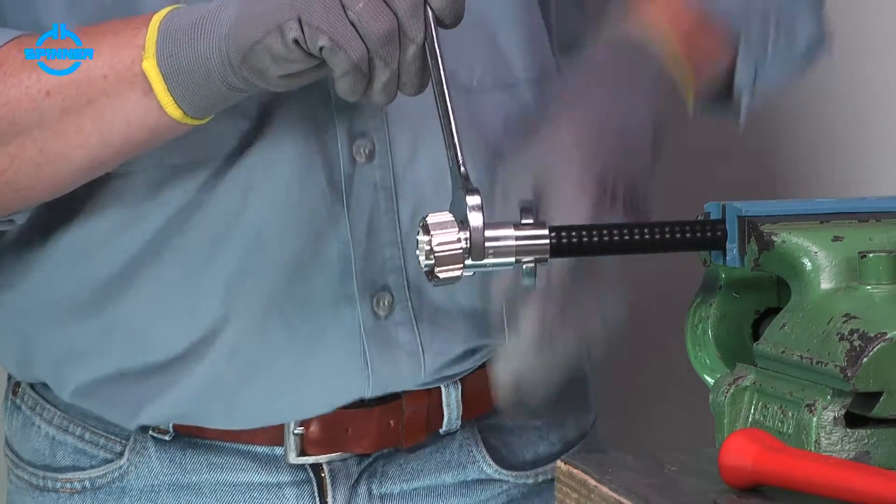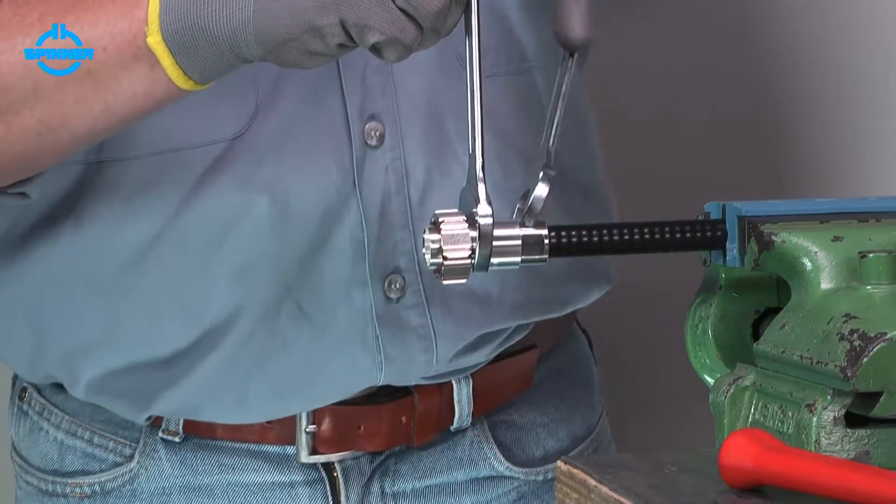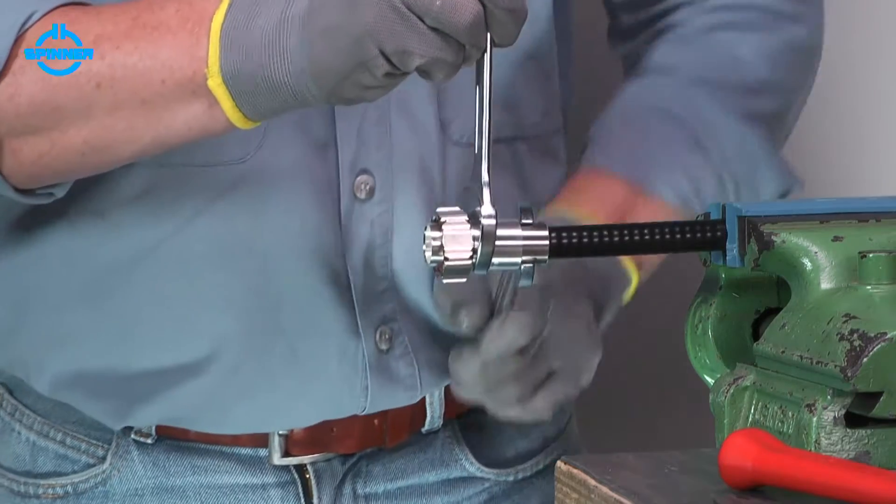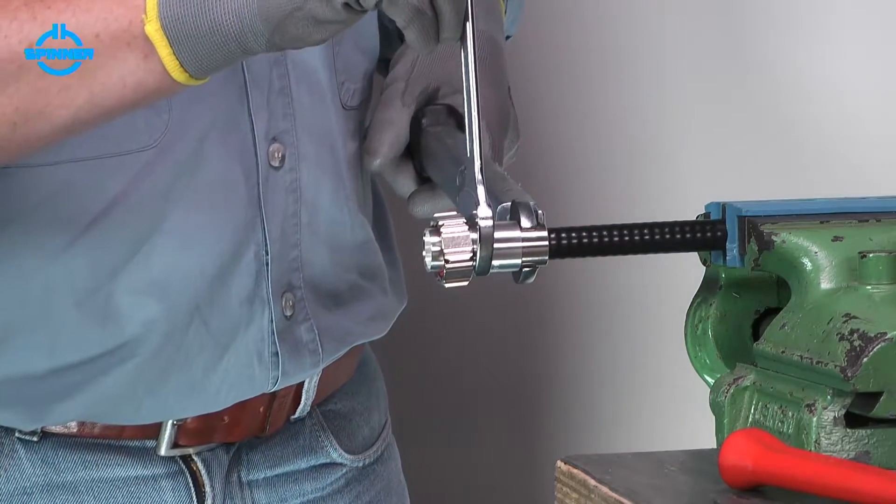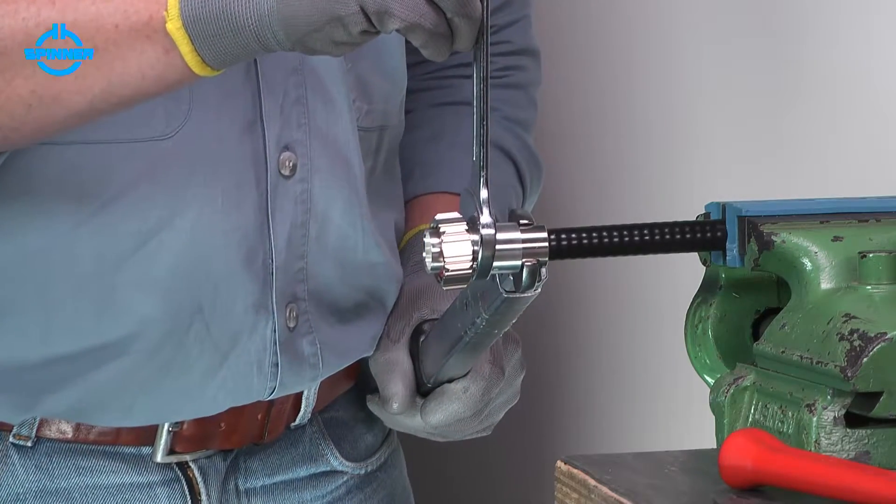Tighten the back nut and the connector body using open end spanners. Make sure to hold the body and rotate the back nut only. Torque the back nut to the value given in the installation instructions.